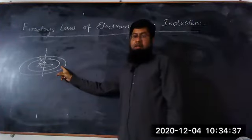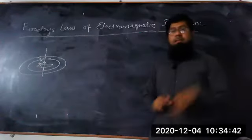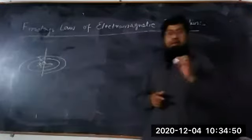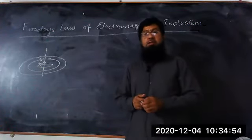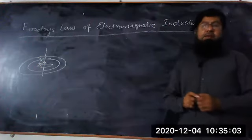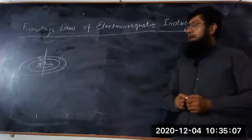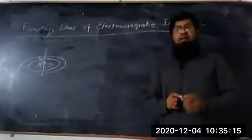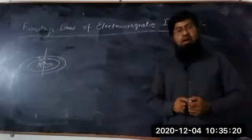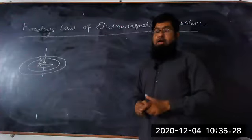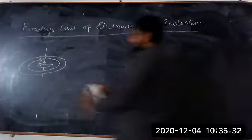Now one important question: the current is producing a magnetic field — is it possible that the magnetic field can produce a current? The answer is yes. The magnetic field can produce a current, but the condition is that the magnetic field should change with respect to time. A uniform magnetic field cannot produce current or EMF in the wire or coil. Only if the magnetic flux is changing with time — the rate of change of magnetic flux — can it produce EMF in the coil. This law is explained by Faraday and we call it Faraday's Law.